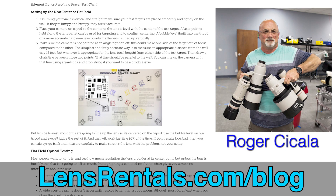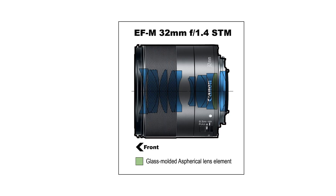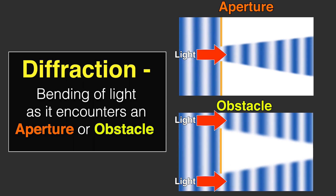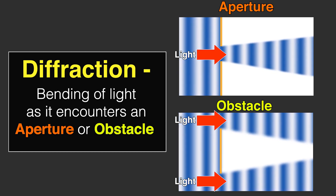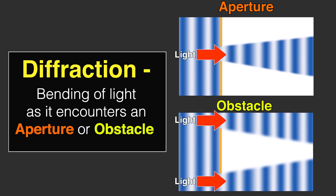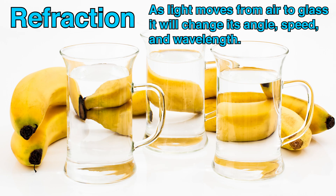Lens resolving power is defined by a few important things. What you need to understand is that a single lens is not one piece of glass — it is made up of multiple pieces of glass, and light does some very weird things when it passes through an opening like an aperture or around an object: it bends just a little bit. This bending of light is referred to as diffraction. Refraction is a little different and refers to light passing through different substrates — when light comes through air and then hits glass, it changes its wavelength and its angle.